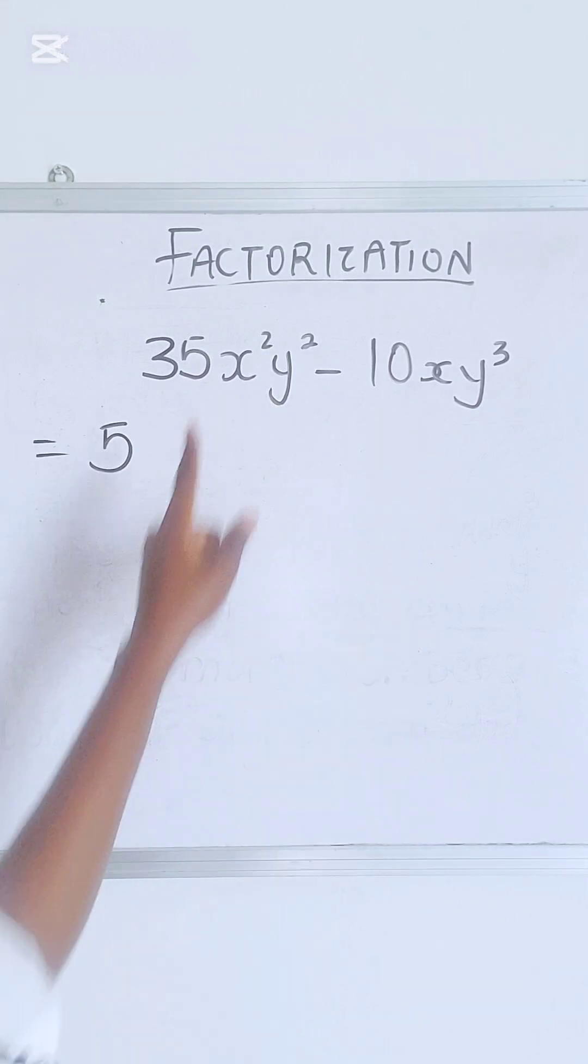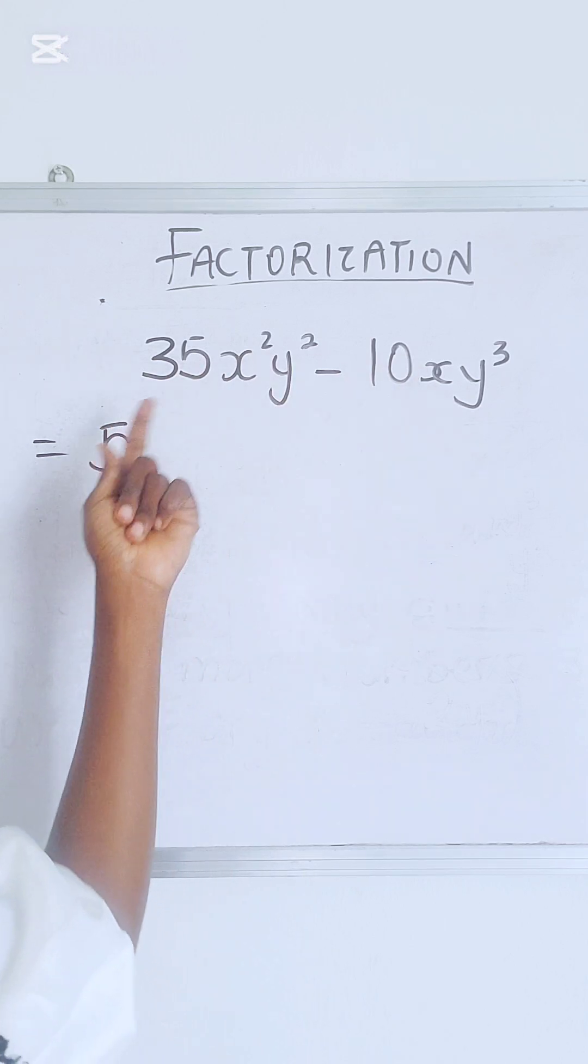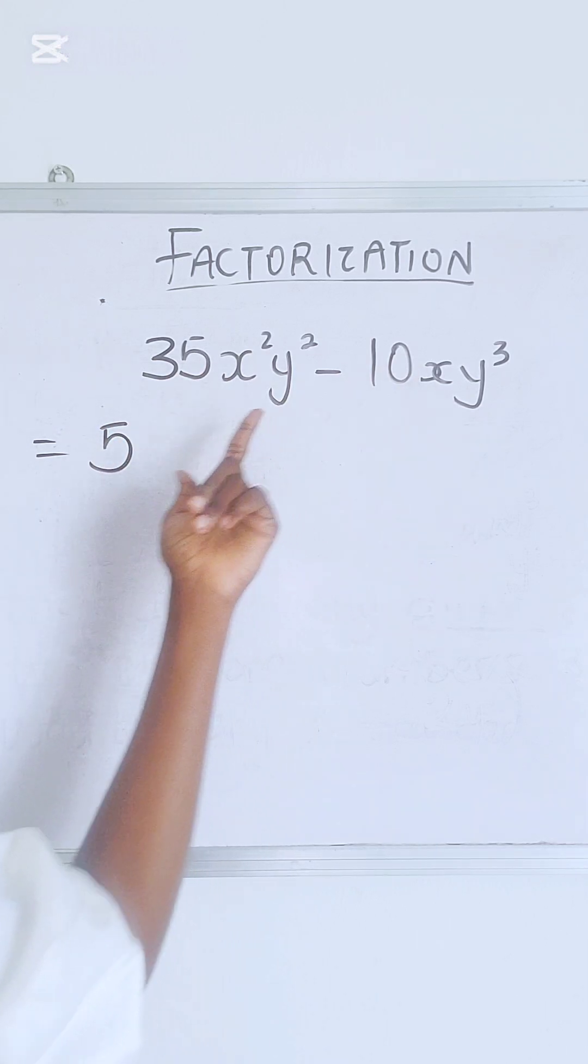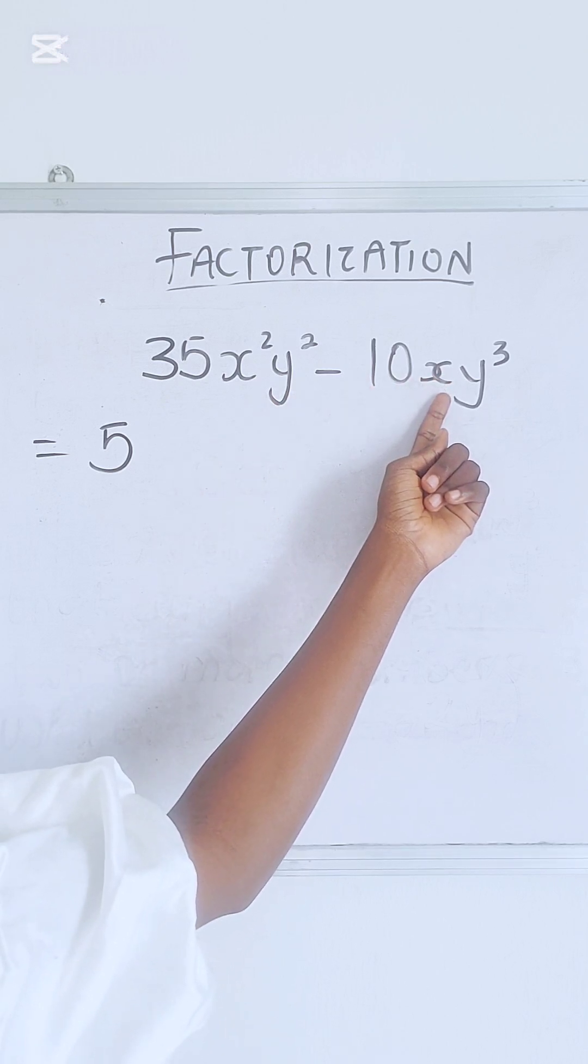Now moving on, we have x here and we have x here. So how can we know what x to pick? This x has a power of two, this x has a power of one. We usually don't write it, but there's a one there, so pick the lower one.